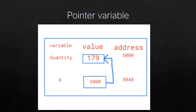For a normal variable: int quantity = 179 means the memory location is named 'quantity', the stored value is 179, and the memory location address is 5000.